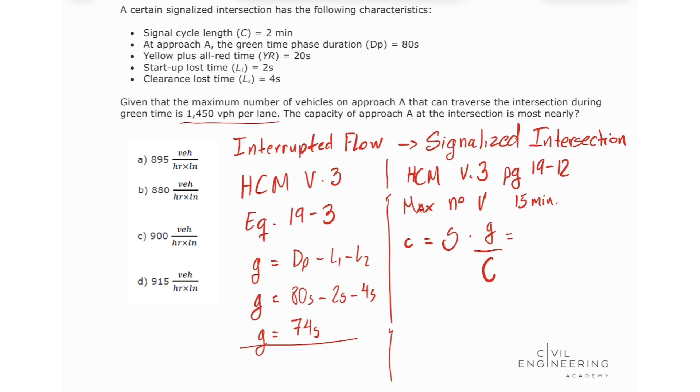Let's input these values. So we have that our flow is going to be 1,450 vehicles per hour per lane times our effective green time that we calculated, 74 seconds, divided by our signal cycle length C.